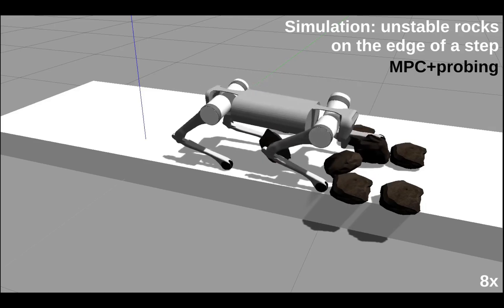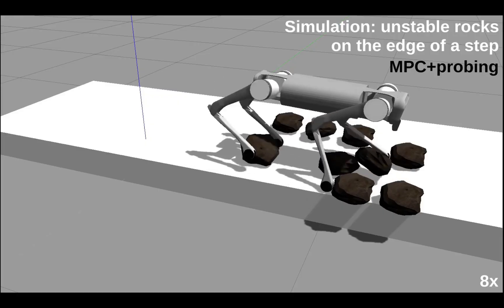The robot manages to further traverse the terrain without any more failures.